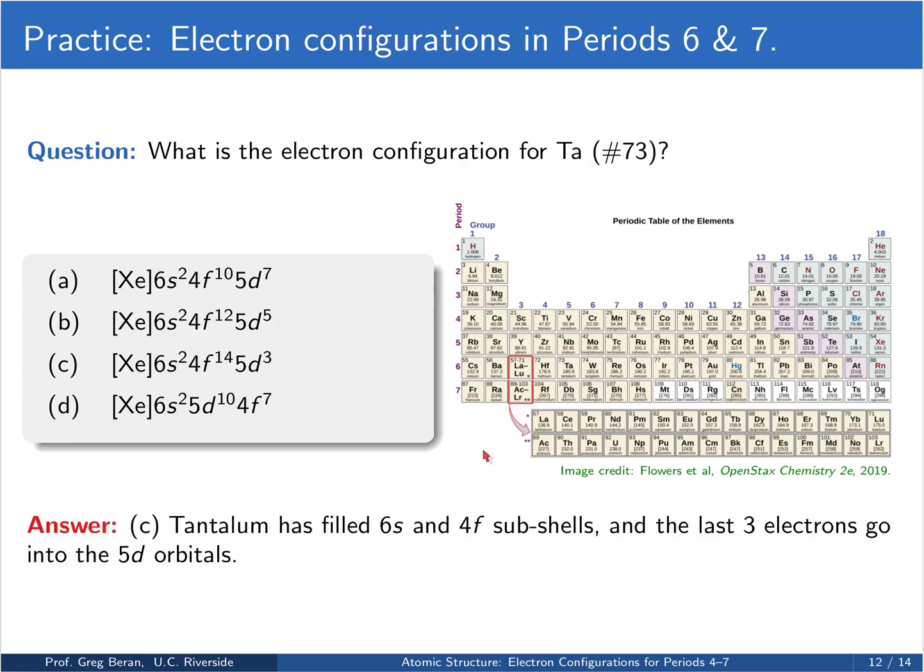Okay, so tantalum has the 6s orbitals filled. We've also gone completely through the lanthanides, meaning we filled the 4f shells, and we have 1, 2, 3 electrons that can go into the d orbitals. So we expect a 6s2, 4f14, 5d3 configuration, and that is in fact the correct answer.